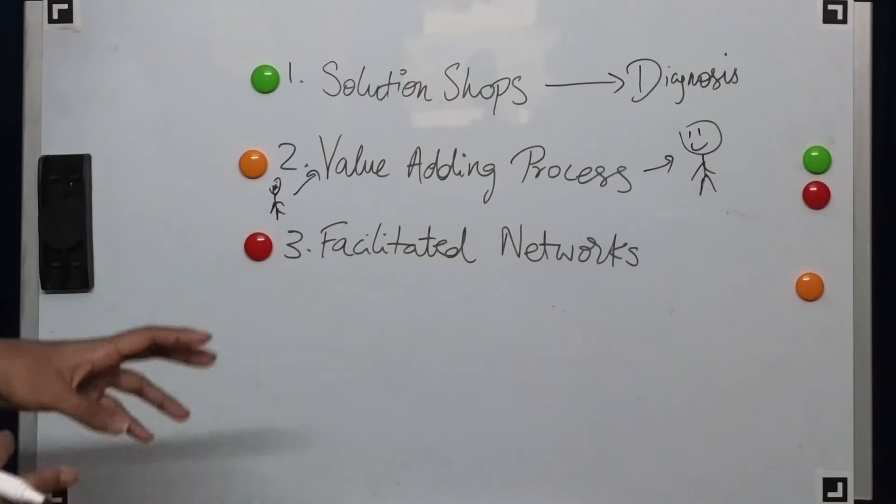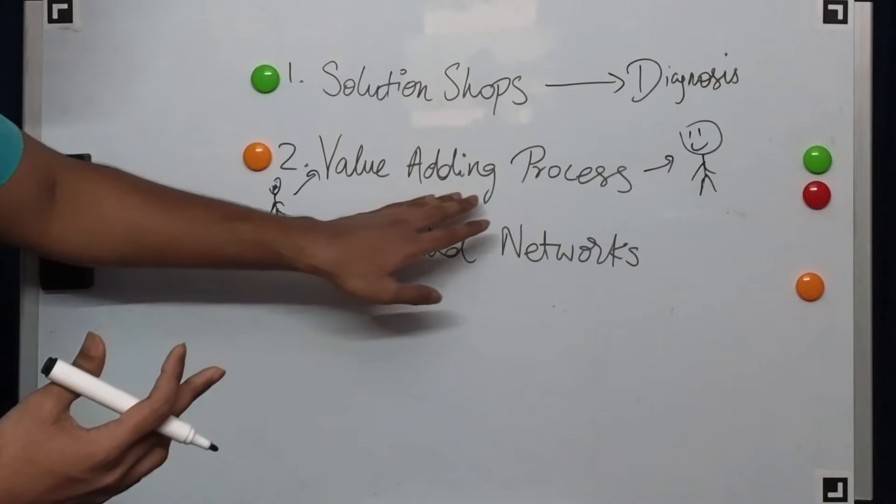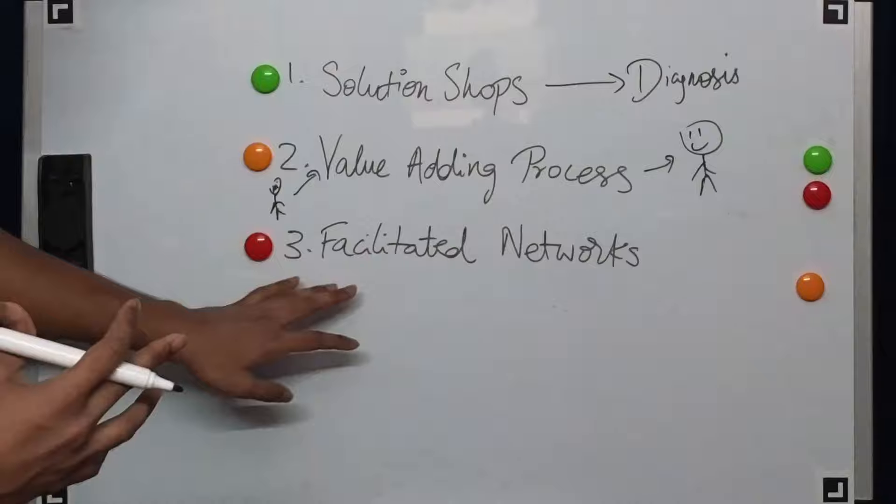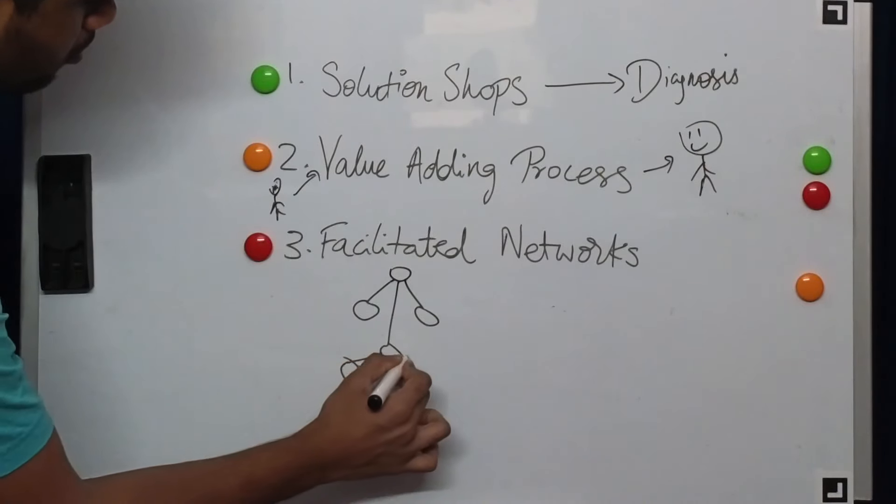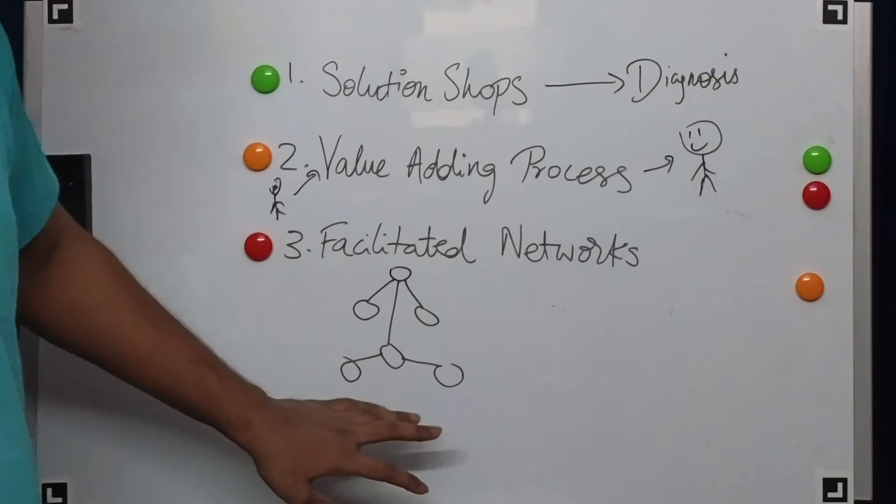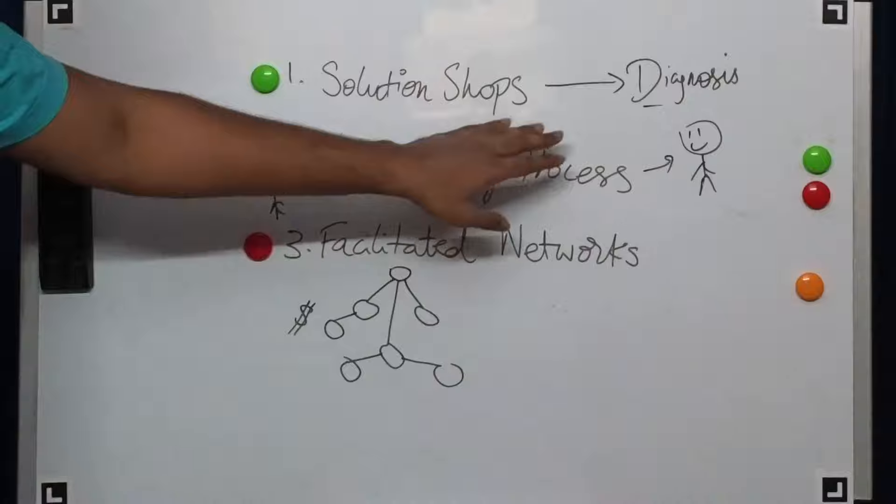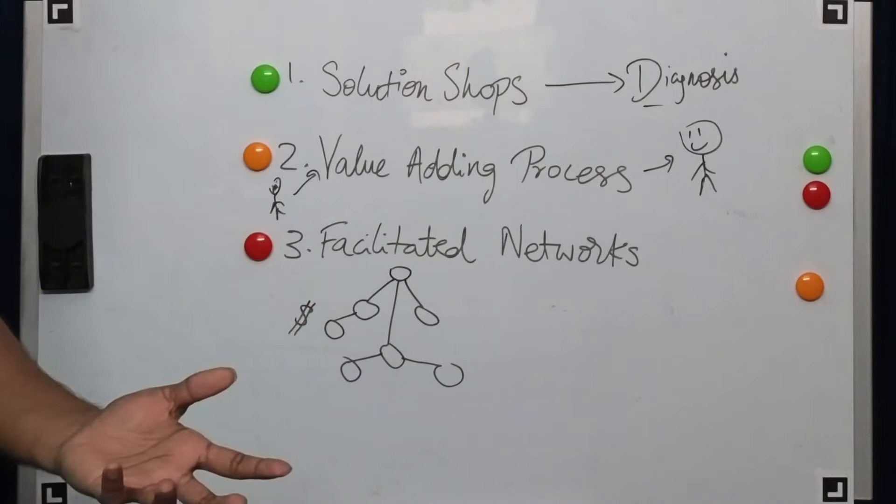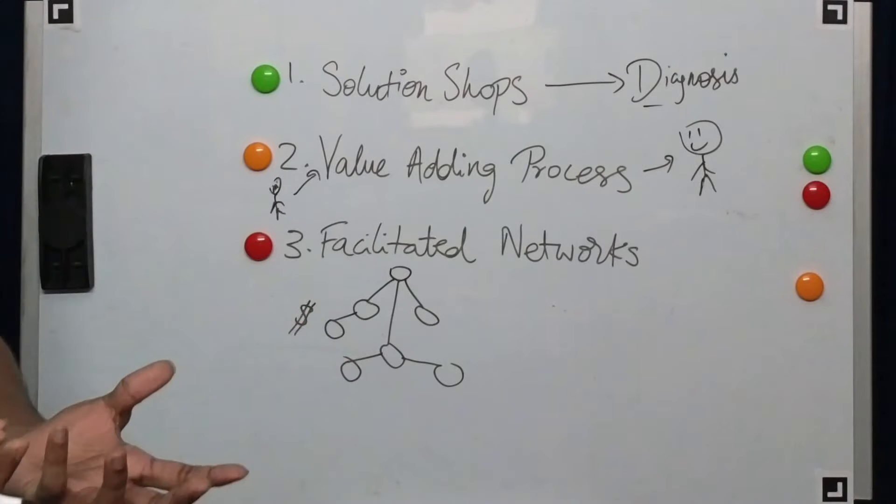But in case the diagnosis is chronic, for example, type 2 diabetes or chronic depression, there is no one single value-adding process, there is no one single medication or surgery that can cure this particular ailment. Then facilitated networks actually become much more powerful. Here, what you have is multiple participants in the network - some of these may be patients, some of these may be nutritionists, some of these may be diabetologists. A patient comes and joins this network, and they already have the diagnosis made. So let's say a patient with type 2 diabetes now pays a fixed fee to the facilitated network to now manage and control his diabetes.